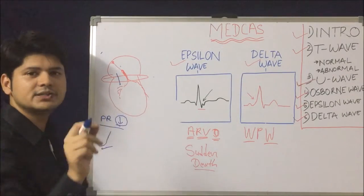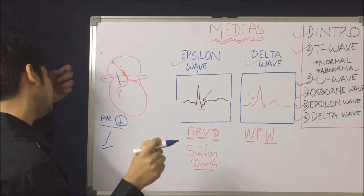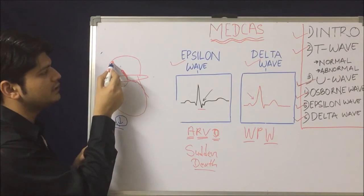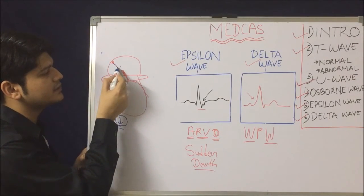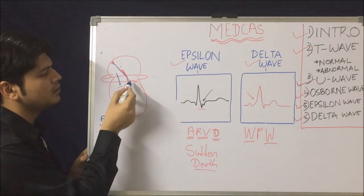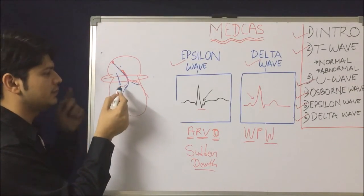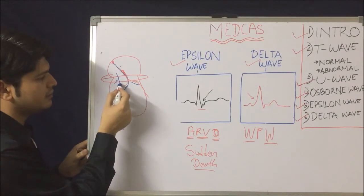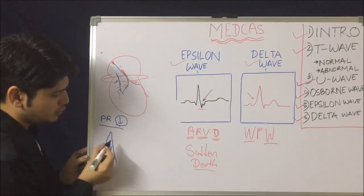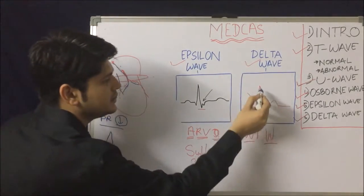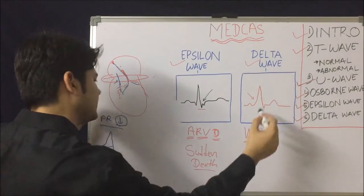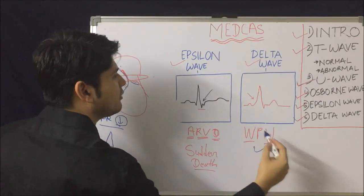The second phenomenon is muscle-to-muscle conduction producing the delta wave. Simultaneously, current also travels via the SA node to AV node to the bundle and Purkinje fibers, which catches up with the accessory pathway current, and after that the QRS complex becomes smooth. This is the mechanism of delta wave generation in Wolf-Parkinson-White syndrome.